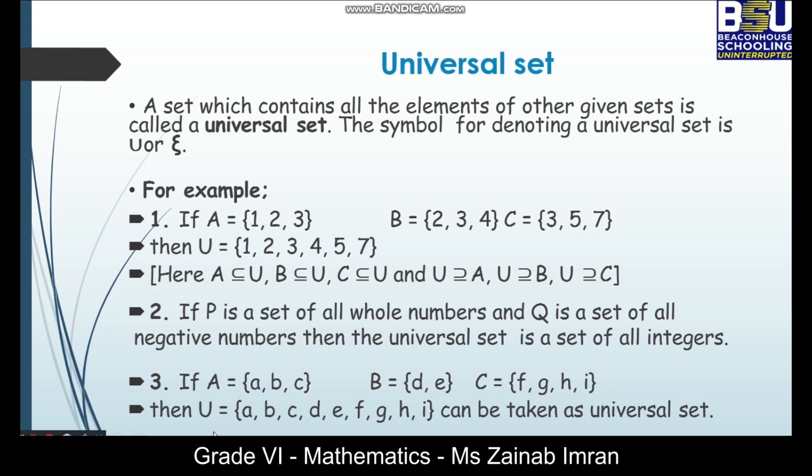then universal set equals to a, b, c, d, e, f, g, h, i can be taken as a universal set.